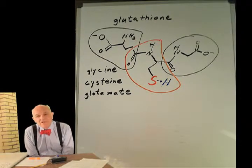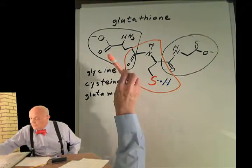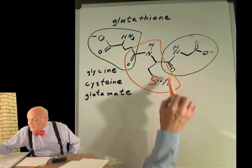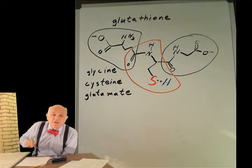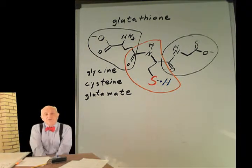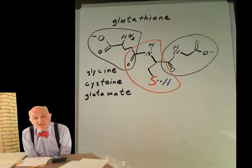Recall that cysteine is one of the amino acids that has a sulfur group. So we have the glycine, the glutamate, and the cysteine is the one in the middle. The sulfur group is the one we're interested in. It's the sulfur group that donates the free radical, and it's the sulfur group that takes on the instability.